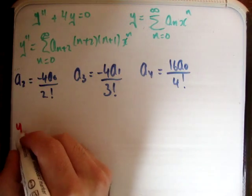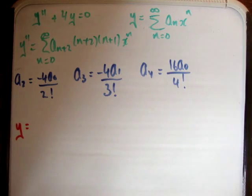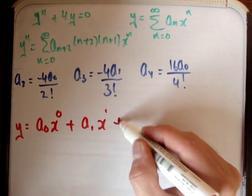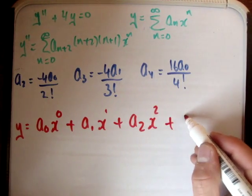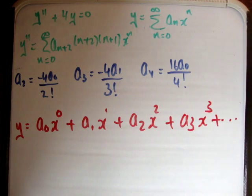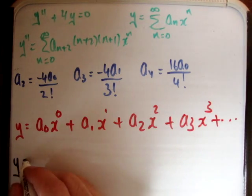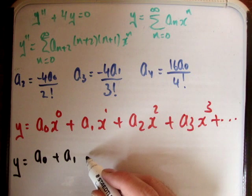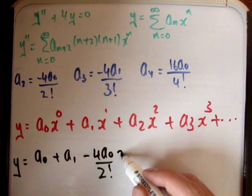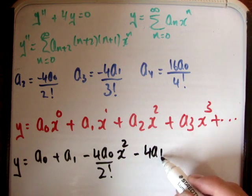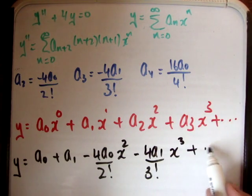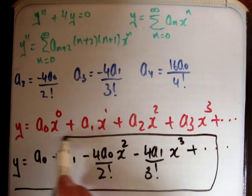We know y equals the sum from n equals 0 of a_n x to the n, so expanding: y equals a_0 plus a_1 x plus a_2 x squared plus a_3 x cubed plus dot dot dot. Substituting the a_n values: y equals a_0 plus a_1 x plus (negative 4 a_0 over 2 factorial) x squared plus (negative 4 a_1 over 3 factorial) x cubed plus dot dot dot. That is the solution to the differential equation.